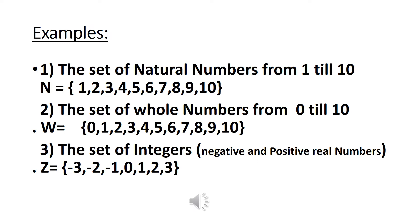Example 3: The set of integers — negative and positive real numbers. Answer: Z = {-3, -2, -1, 0, 1, 2, 3}.